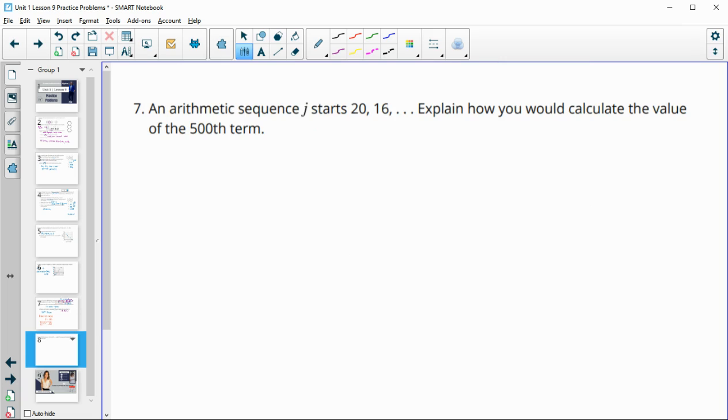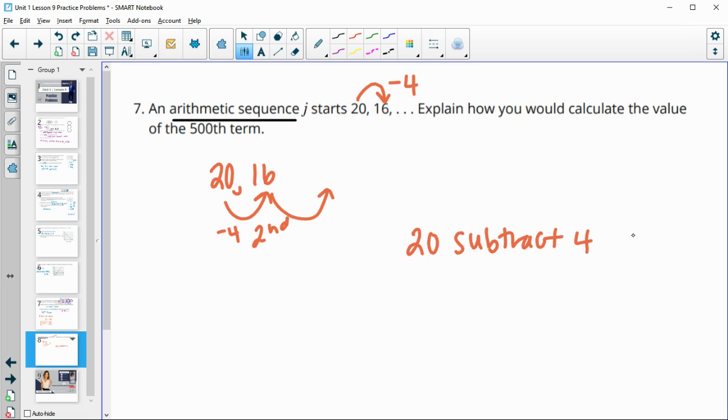And then number 7, an arithmetic sequence starts at 20 and then 16. So it's arithmetic. So we know that it's adding or subtracting. In this case, it's going down. So it's minusing 4 or adding a negative 4. Explain how you would calculate the 500th term. So you would take 20, that's your first term, minus 4 gives you 16, your second term, when you've minused 4 once. Your third term, it would be minusing 4 for a second time. So in this case, you're going to take 20 and you're going to subtract 4 499 times.